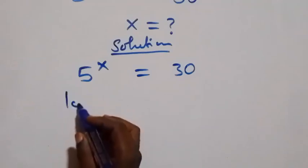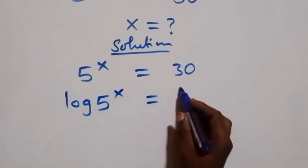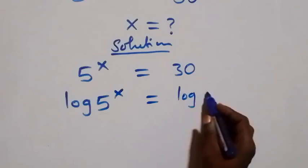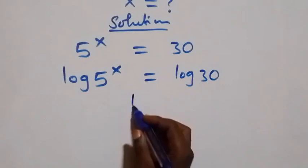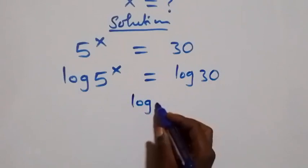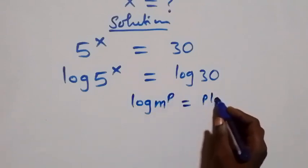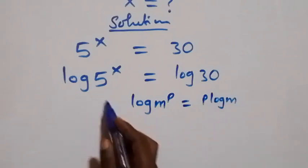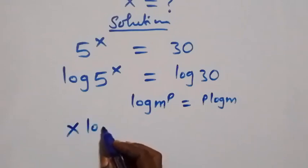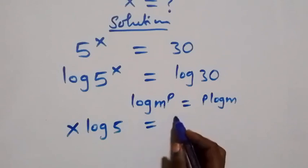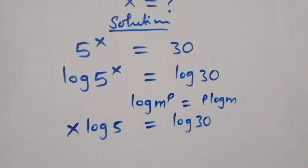That is, we have log of 5 raised to power x equals to log 30 on this side. Then from the power rule of logarithms, when we have log m raised to power p which equals p·log m, what we have here becomes x·log 5 equals to log 30 on this side.